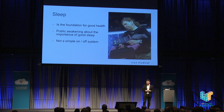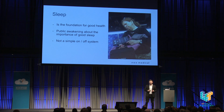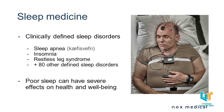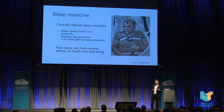Sleep is the foundation of good health, and there's been a lot of public awakening about sleep in recent years. But sleep is complicated — it's not a simple on-off system, and a lot can go wrong. There are about 80 clinically defined sleep disorders. Some of the more common are sleep apnea, the inability to breathe properly during sleep; insomnia, the inability to fall asleep; and restless legs syndrome, a neurological disorder that interrupts sleep. Poor sleep can have severe effects on the well-being of the individual.